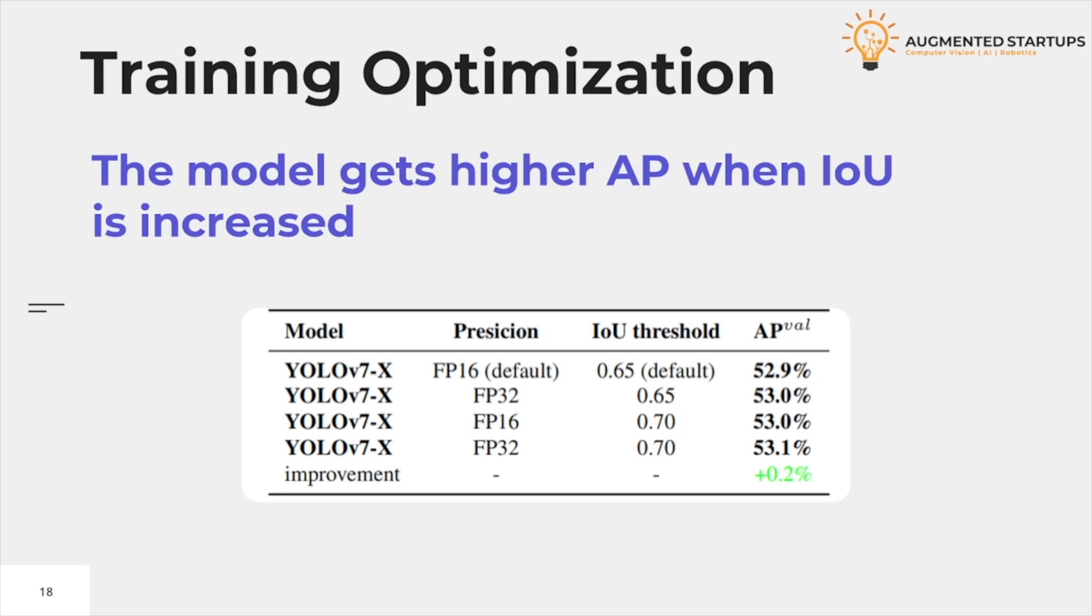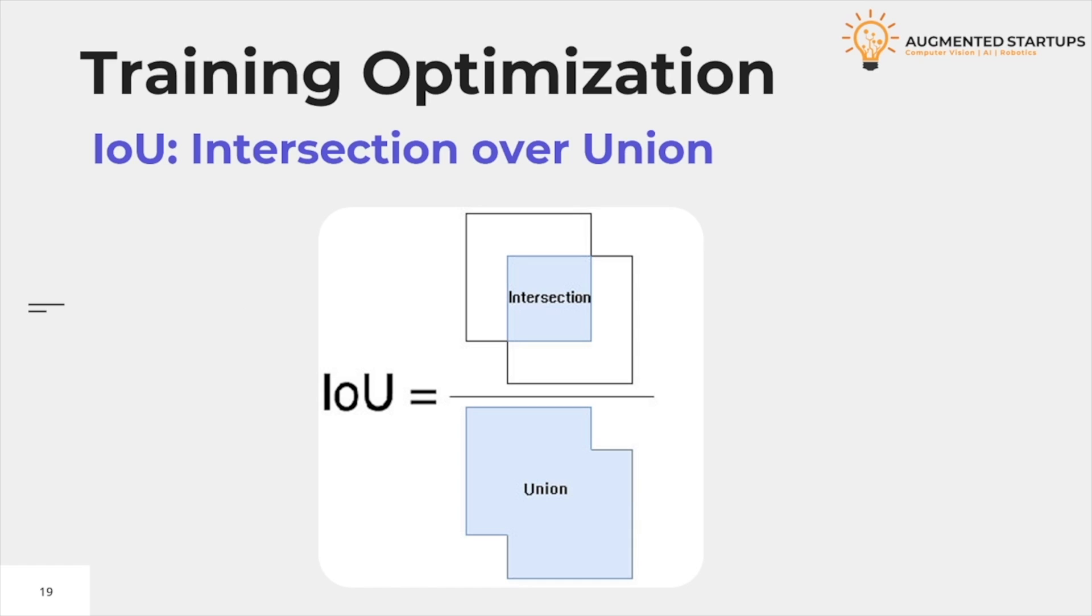During the research, it was figured out that the average precision was higher when the IOU threshold was increased. So let's see what is IOU to understand why this is important. IOU is nothing but intersection over union. It is a term used to describe the extent of overlap of two boxes. The greater the region of overlap, the greater the IOU.